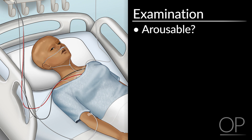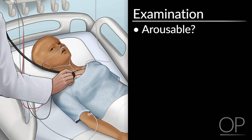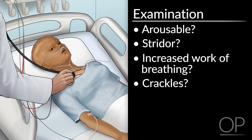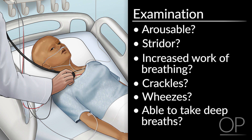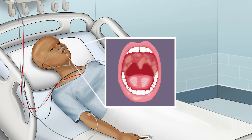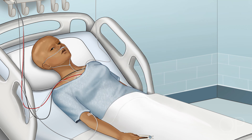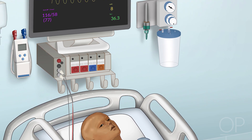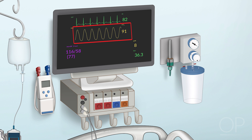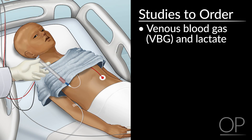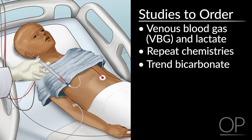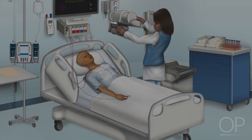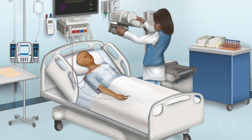On examination, is the patient arousable? On the respiratory exam, does the patient have stridor, increased work of breathing, crackles, or wheezes? Is the patient able to take deep breaths? Evaluate the patient for signs of mucositis. If the patient is receiving supplemental oxygen, remove the oxygen and evaluate oxygen saturation on room air. Assess the respiratory rate and any change. Is suction available in the room if needed? Studies to order: send a VBG and lactate, repeat CHEM-10 and trend the bicarbonate level. Obtain a new chest x-ray if this is a new oxygen requirement, ideally with two views if the patient is safe to travel to radiology.